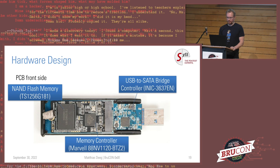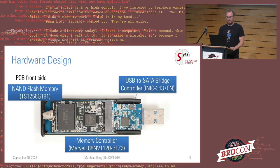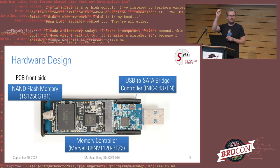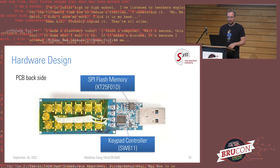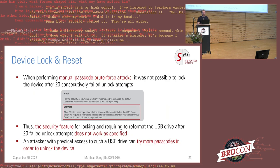Looking at the front of the PCB: flash memory, USB-SATA controller, and memory controller. Interestingly, the storage is actually an SSD in M.2 form factor — not soldered to the PCB but removable, which is also useful for attacking it in an external enclosure scenario. On the other side we have SPI flash memory containing the firmware for the USB-to-SATA bridge controller, and a keypad controller labeled SW611. I couldn't find any documentation for it, but it's responsible for handling PIN input.